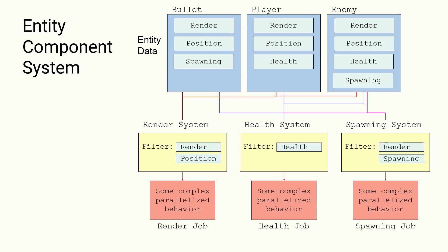The same goes for the Spawning System — find me everything that has a Render and Spawning. And then the System takes the Entities that are returned by this filter and it performs some job on them. It will do some rendering, do some health maintenance, spawn some new ones, or whatever. So those are the pieces of this: Entities have this Data component, and then we write these Systems that process that data.